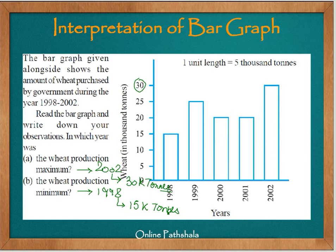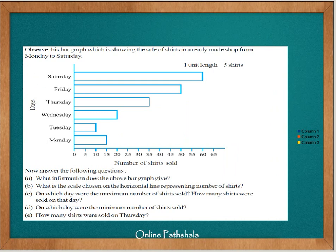This is how we can interpret and extract information from a bar graph. Let's look at one more example. The previous graph was a vertical bar graph; this next one is a horizontal bar graph. Here, 1 unit length on the scale is equal to 5 shirts. The x-axis represents the number of shirts sold, and the y-axis represents each day of the week.